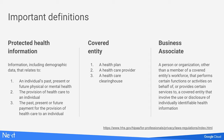Protected health information is health information that includes demographic info as well as information referring to past, present, and future medical information, the provision of healthcare, and billing. A covered entity is either a health plan, a healthcare provider such as a doctor or hospital system, or a healthcare clearinghouse. A business associate is an institution or person who works with a covered entity, does work on their behalf, and as part of that work protected health information is disclosed. A covered entity and a business associate must execute a business associate agreement governing how that data transfer is managed and controlled.